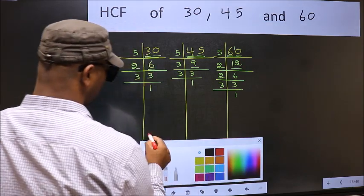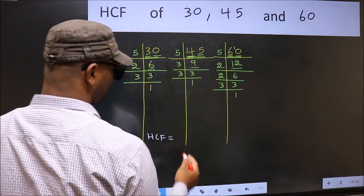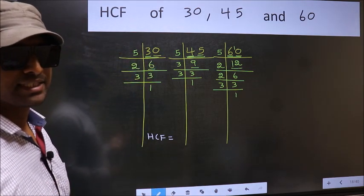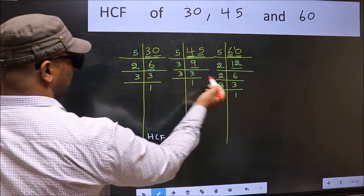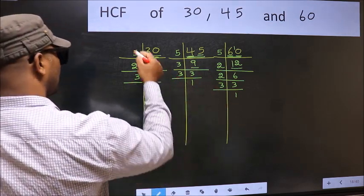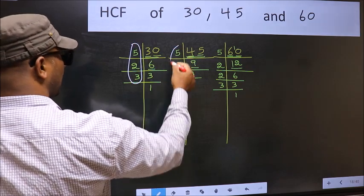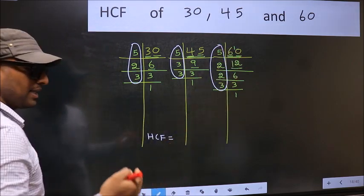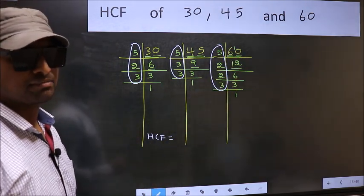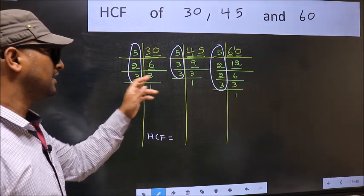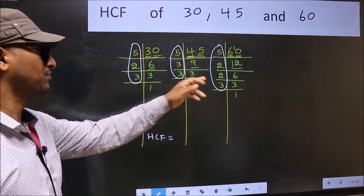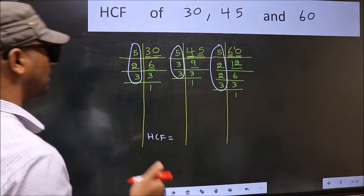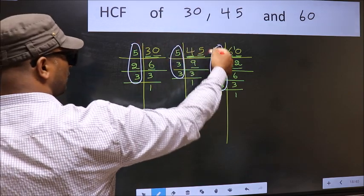Therefore, our HCF is, HCF is the product of numbers which should be present in these 3 places, that is here and here and also here. I repeat, HCF is the product of numbers which should be present in these 3 places. So now let us find the numbers which are present here, here and also here.